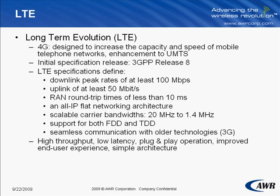The LTE specification provides downlink peak rates of at least 100 Mbps, an uplink of at least 50 Mbps, and radio access network round trip times of less than 10 ms. LTE is built upon a flat IP-based network architecture. It supports scalable carrier bandwidths from 20 MHz down to 1.4 MHz, and both frequency division duplexing and time division duplexing.